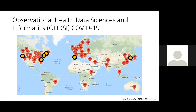Now moving on to the international study: Observational Health Data Sciences and Informatics, or OHDSI, which I presented two weeks ago. The OHDSI network has 300 researchers and 600 million patients. Of the sites with COVID data — shown with black circles with yellow or orange in the middle — six sites have COVID data, and we've completed the analysis for four: Columbia, Stanford, the VA, and Korea, which is a national database. These data are also available on MedArchive.